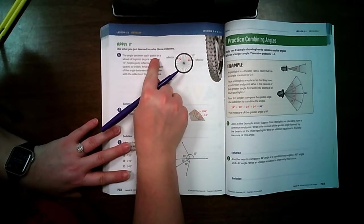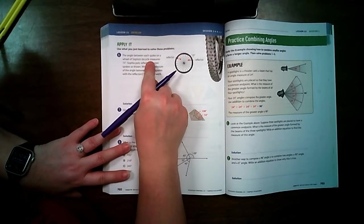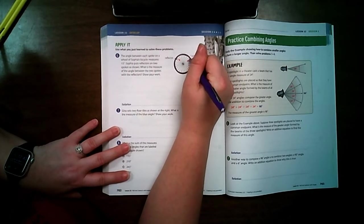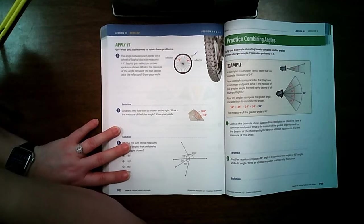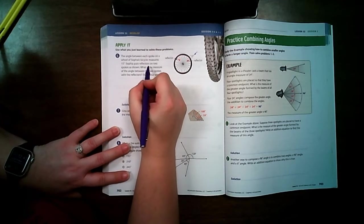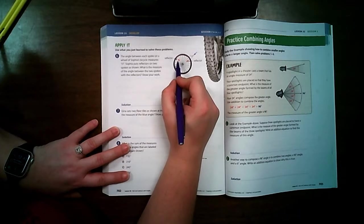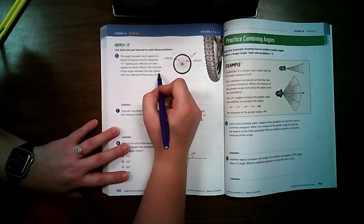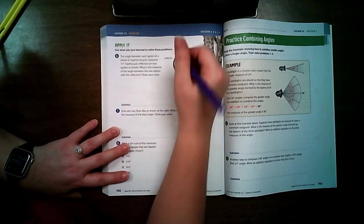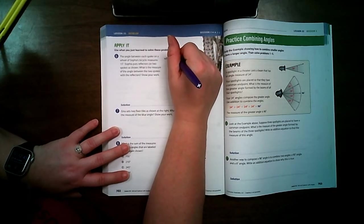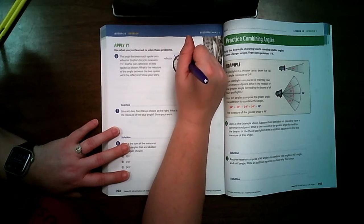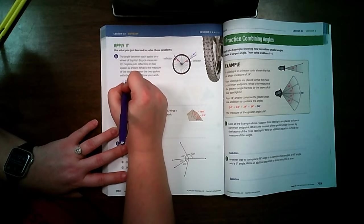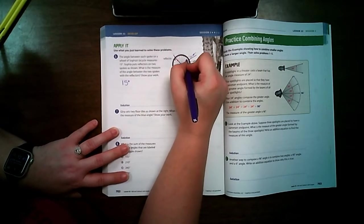The angle between each spoke on a wheel of Sophia's bicycle measures 15 degrees. Sophia puts reflectors on two spokes as shown. What is the measure of the angle between the two spokes with the reflectors? So that means I have to figure out from here to here. So if I know each of these is worth 15, let's see how many spaces there are.